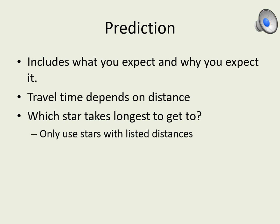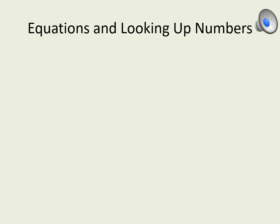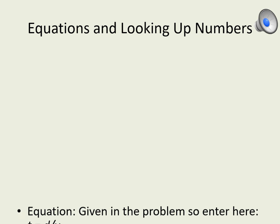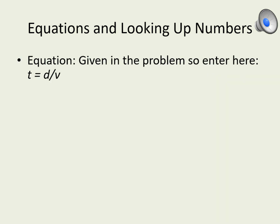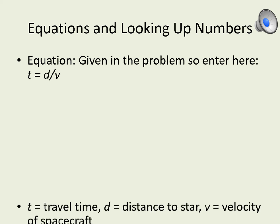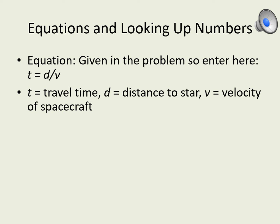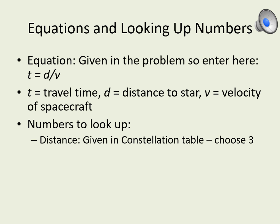Once you've done this, you've finished part A of the assignment. You're already well into the problem and you haven't even started calculating yet. The next two boxes will help us get ready to do the calculation. The first one is the equation we need to use to solve the problem. In this case you've got that equation right in the question, so write it down: t equals d divided by v. This means time equals distance divided by velocity. The second box is where we put in the values we're going to use. We already know the velocity — we wrote that down earlier — so here we put in the distances from the distance column in your constellation table.